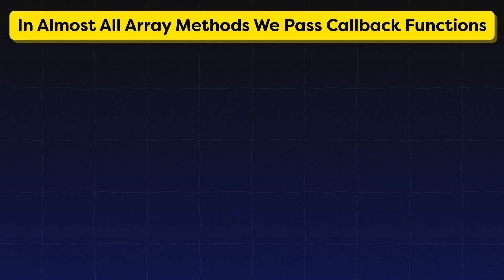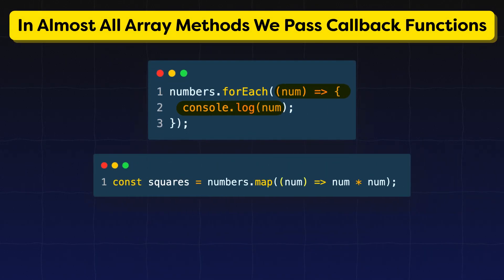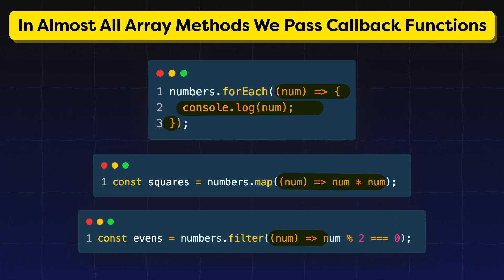Now let me give you another example. In almost all array methods, we pass callback functions. Like in the forEach method, map method, filter method, etc. In all these methods, we pass callback functions.